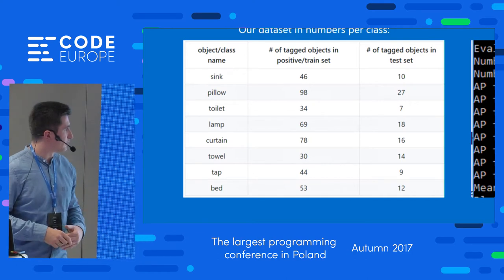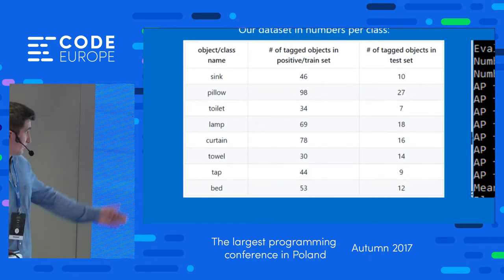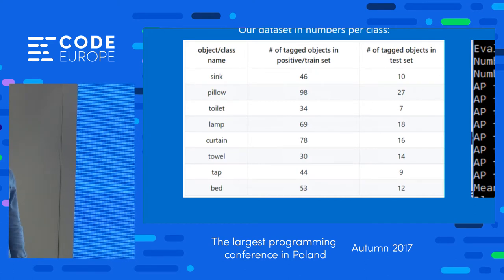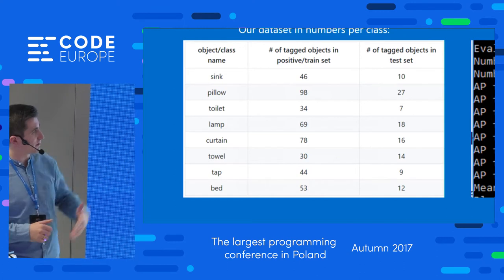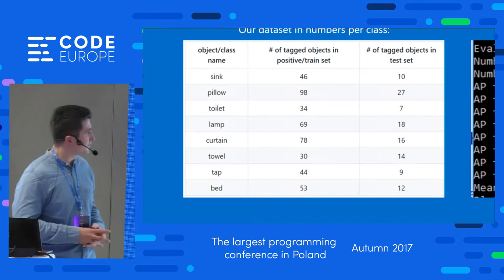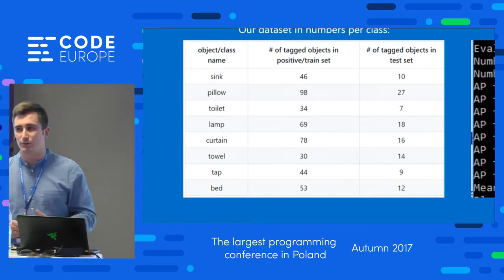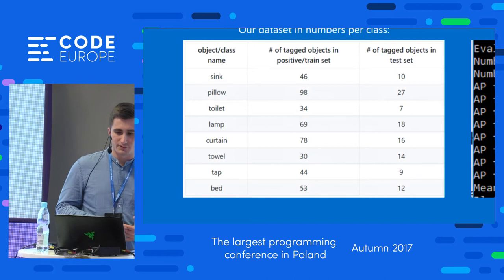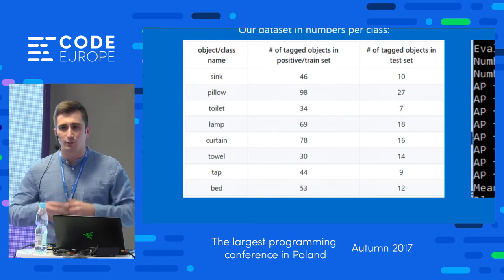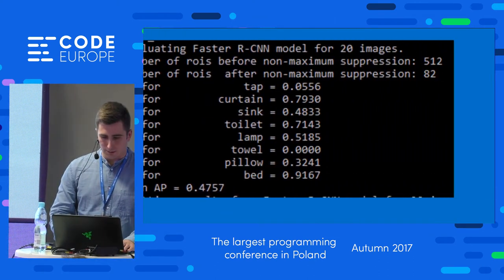Our dataset in numbers: for example, for sink we had 46 tagged objects for the training set and just 10 for the test set. We never had more than 100 objects tagged for training per class — a really small number. And still we were able to achieve very good results, only because we used Transfer Learning. We didn't have to train the whole CNN — it was already smart enough to extract features from images.